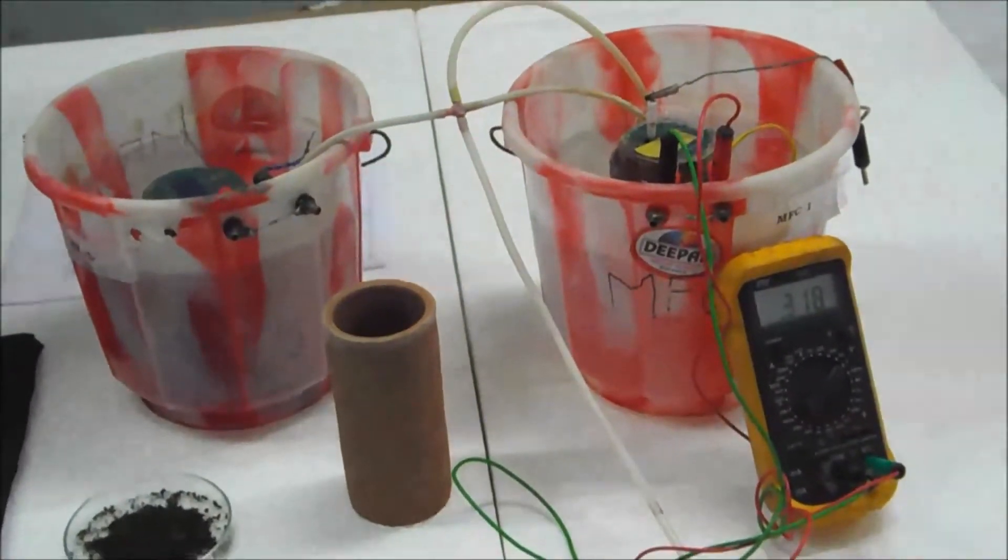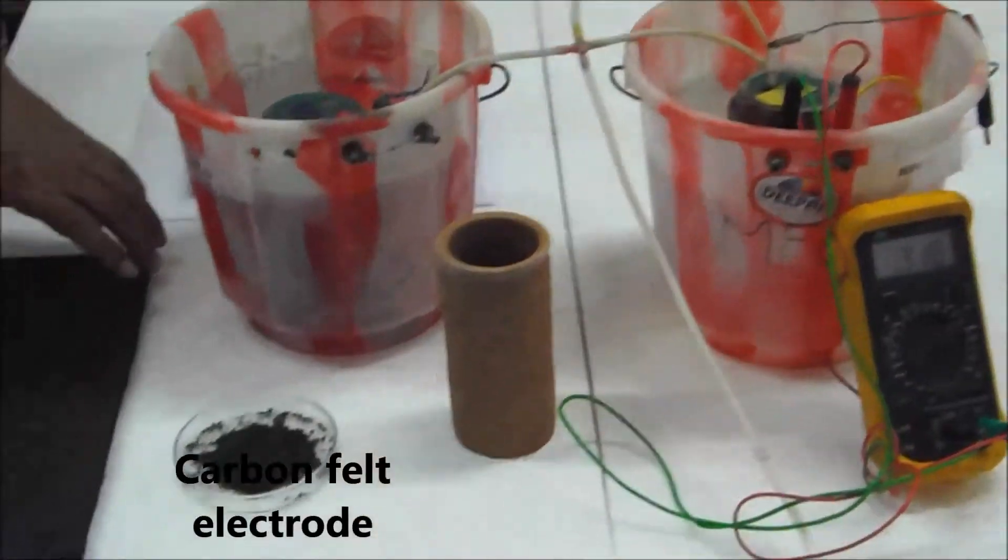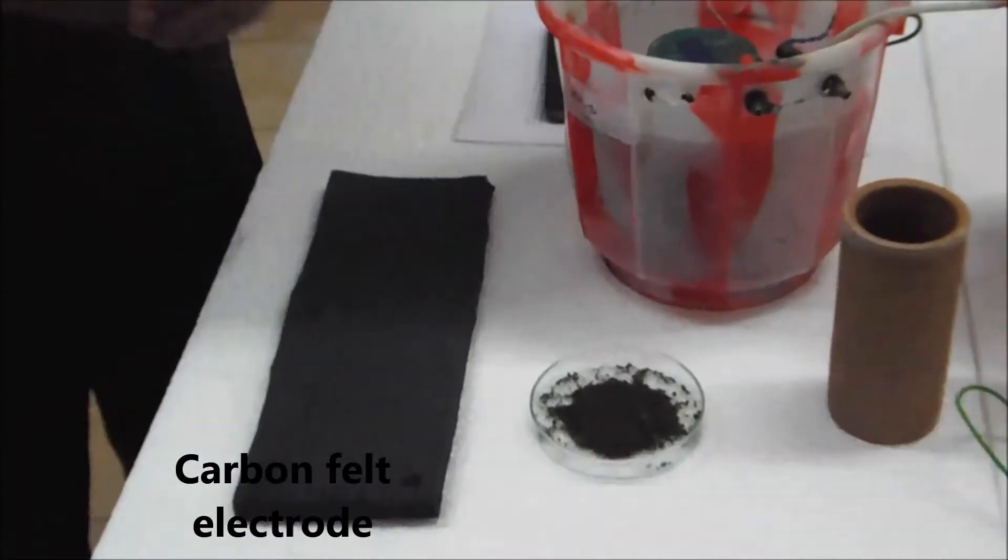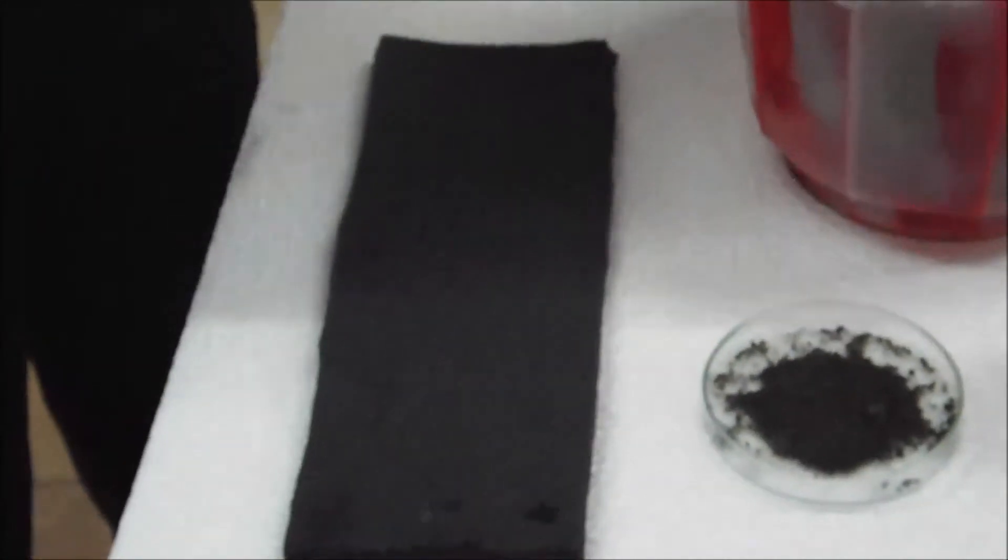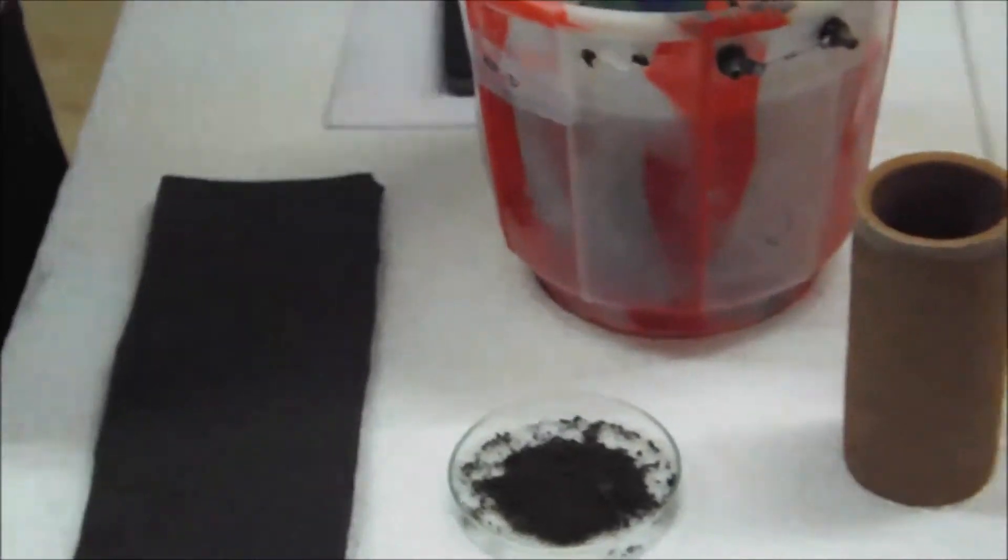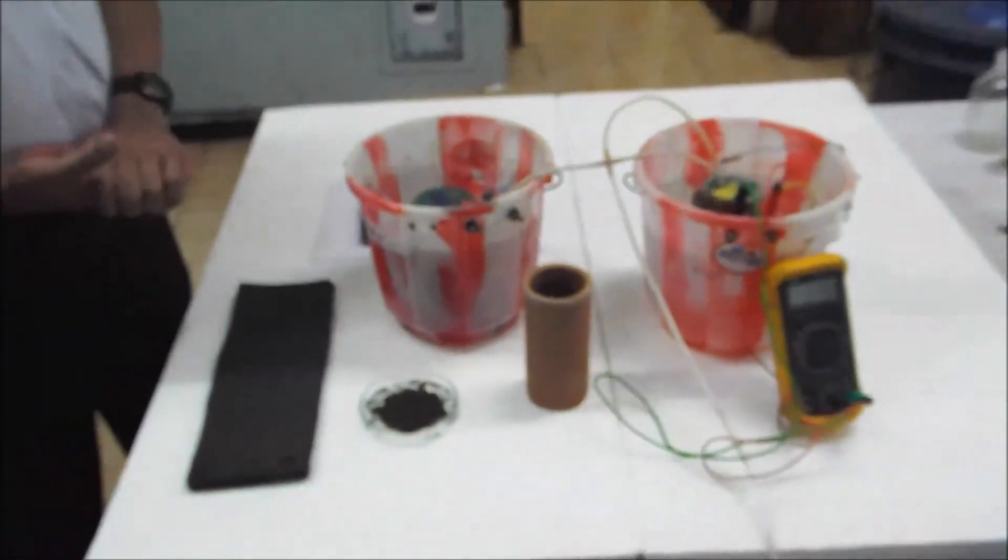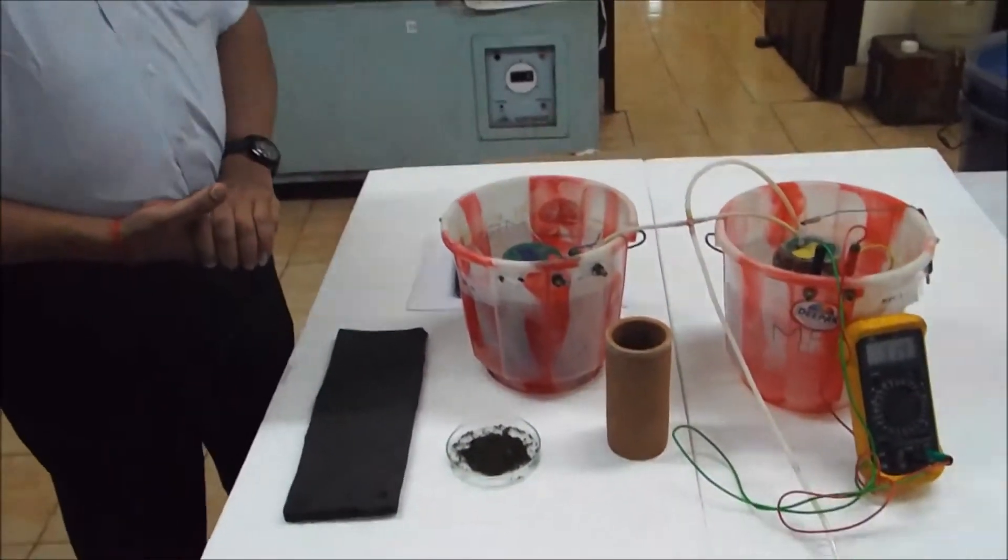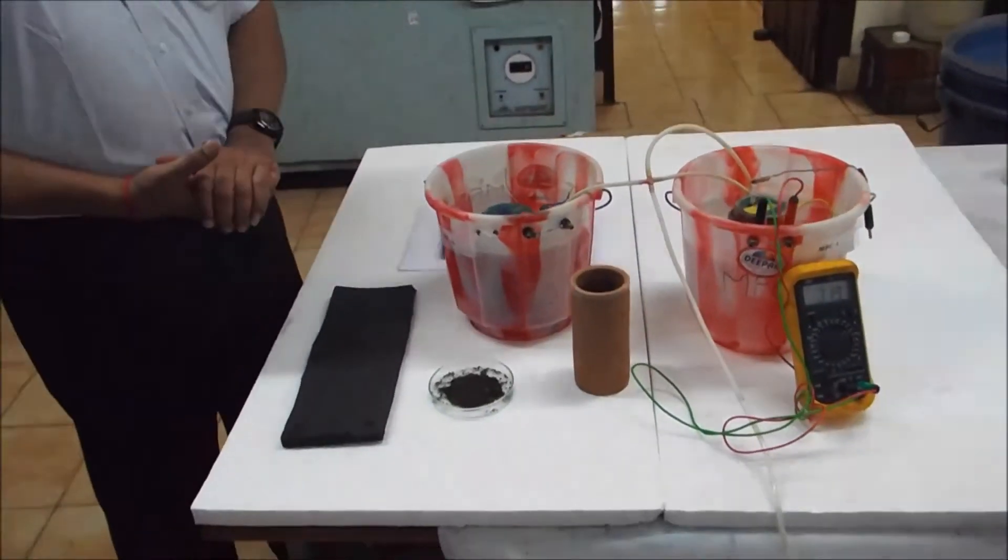The material used for anode and cathode, they are carbon fuel that is used as a cathode material. And mixed anaerobic sludge is used as inoculum in the anodic chamber and no bacterial culture in the cathode chamber.